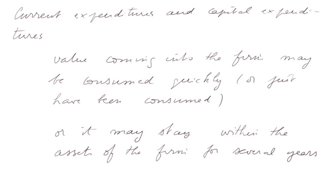We saw two types of expenditures: current expenditures and capital expenditures. Value coming into the firm may be consumed quickly or just have been consumed, in which case it's called a current expenditure. Or it may stay within the assets of the firm for several years, in which case it's called a capital expenditure.